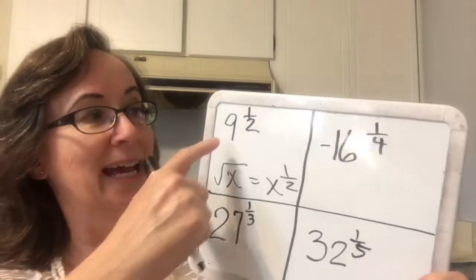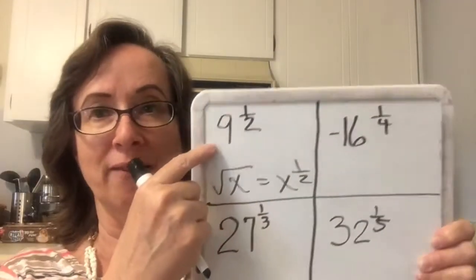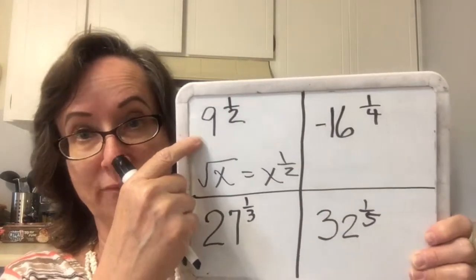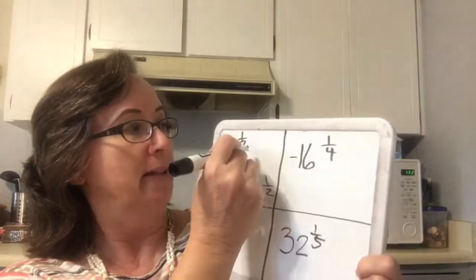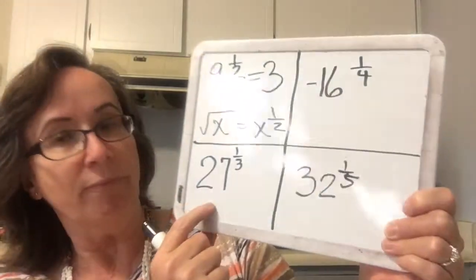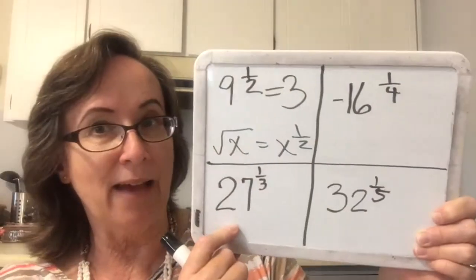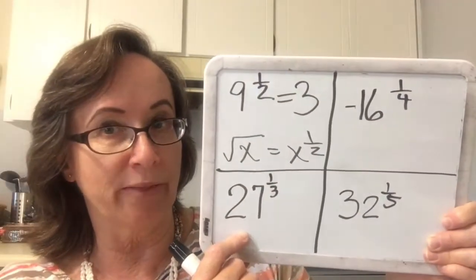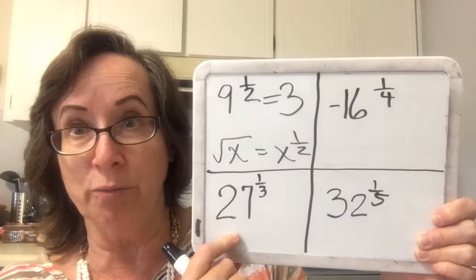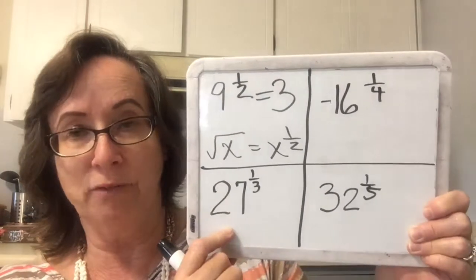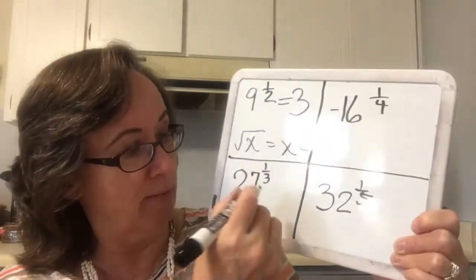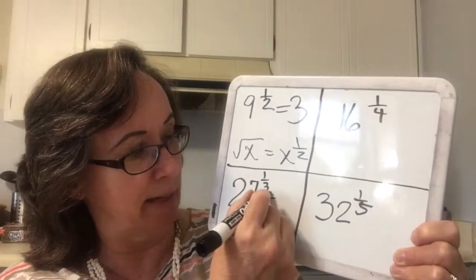9 to the 1/2 means the same thing as the square root of 9, and the square root of 9 is 3. 27 to the 1/3 is the same thing as the cubic root of 27, and the cubic root of 27 is 3.